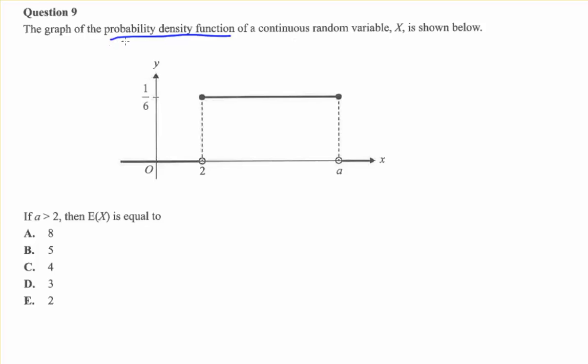For question 9 we have a probability density function and we're required to find the expectation or the mean value. First thing we need to do is solve for A. And the way we do that is by recognizing that a probability density function must have an area under the curve that is 1.